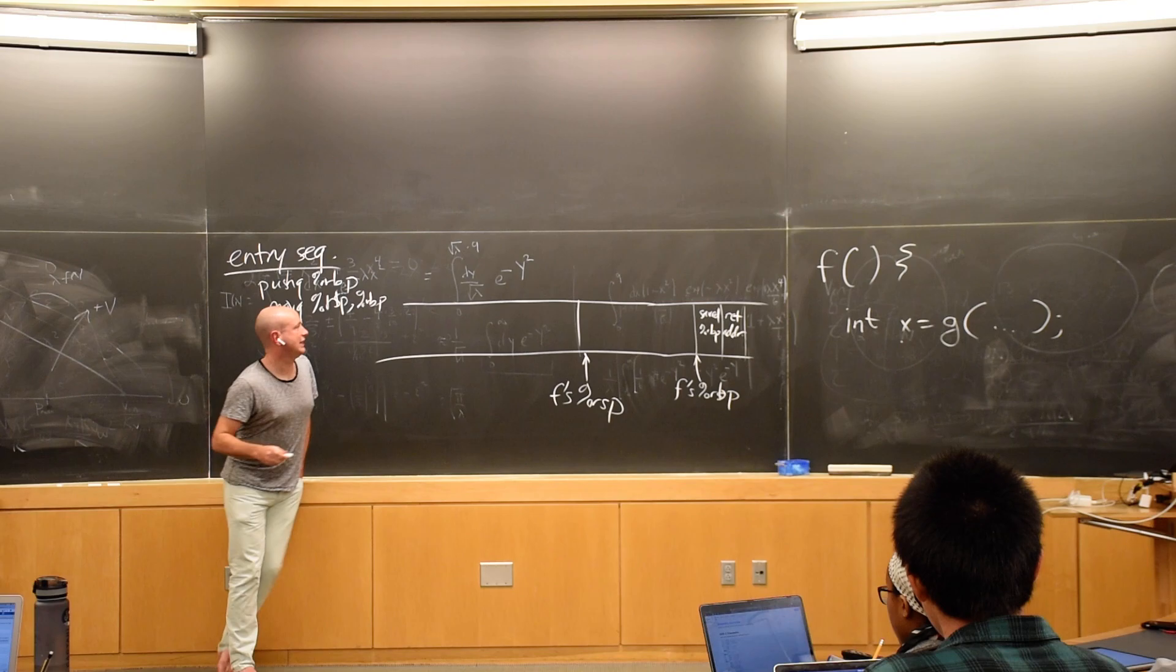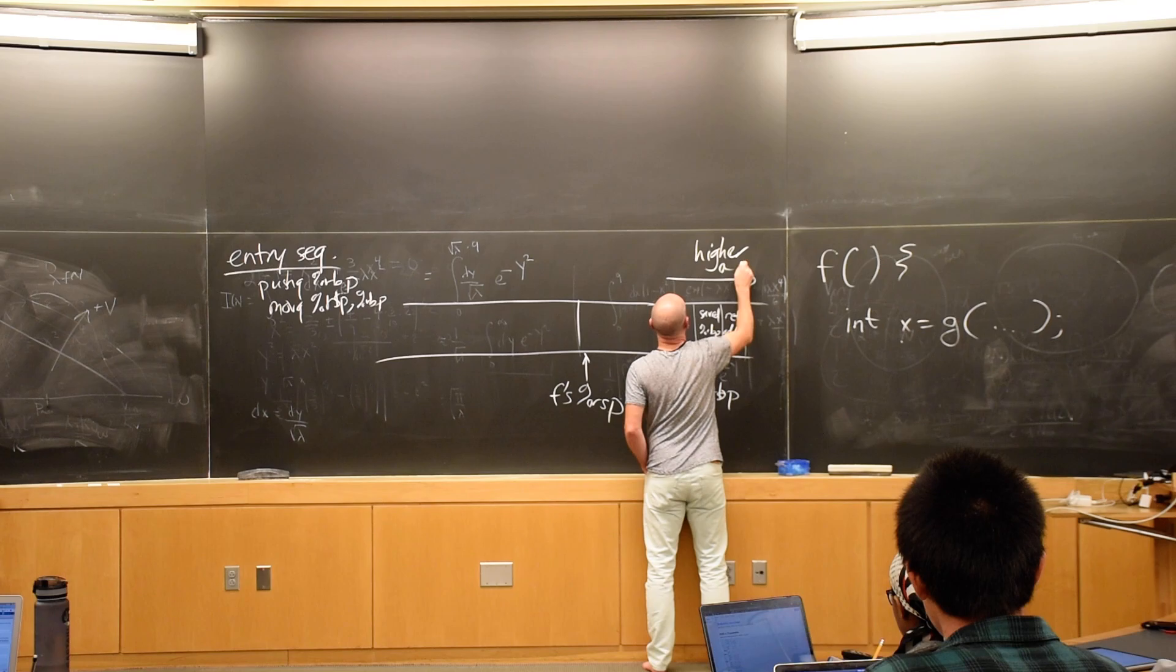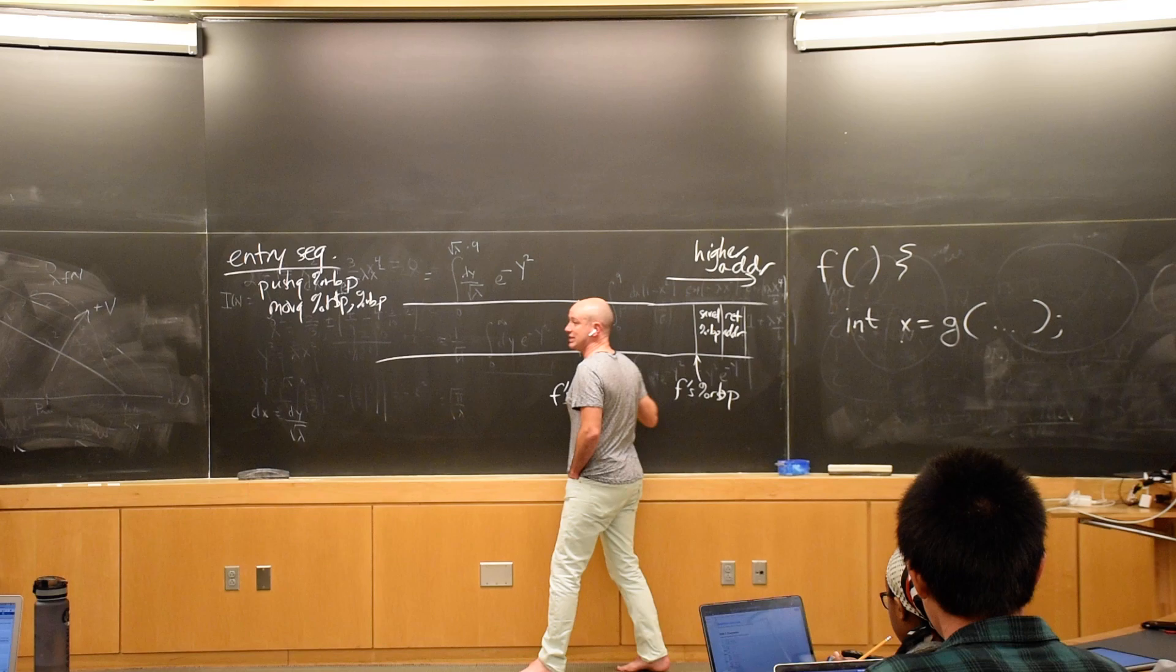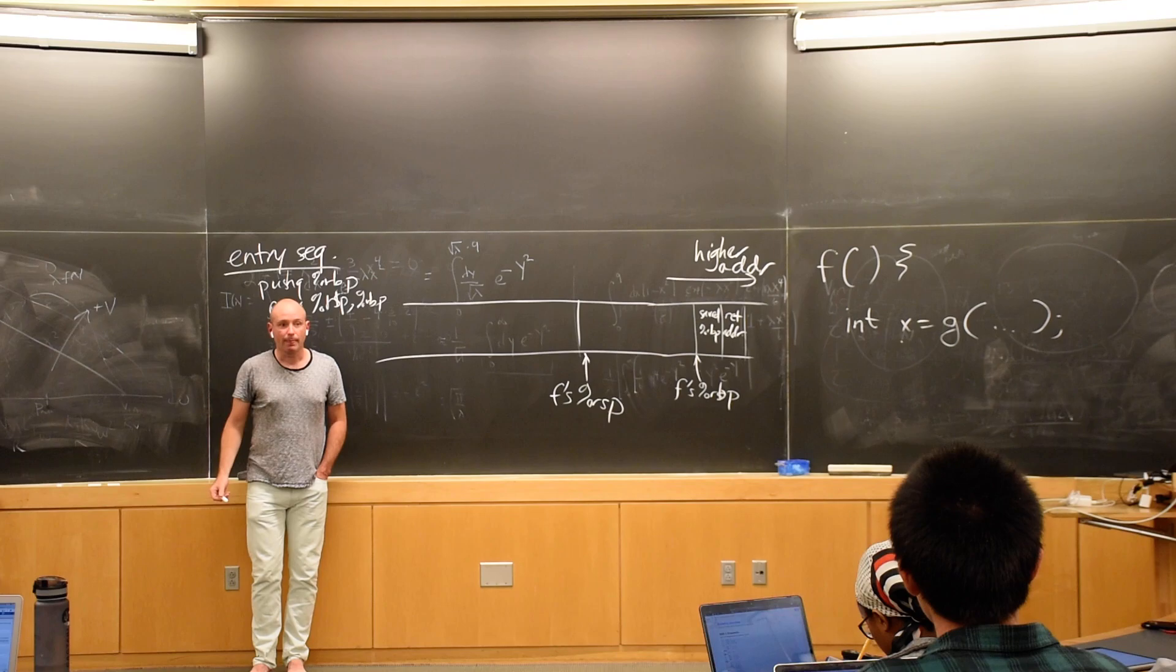So you know a relationship between RSP and RBP. Yes, Max? Which side is the lower? Oh, sorry. Yes, yes. These are higher addresses. So the stack is growing this way. Stacks grow down from higher addresses towards lower addresses.